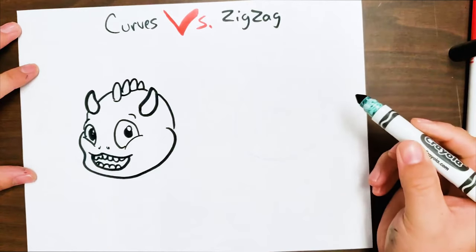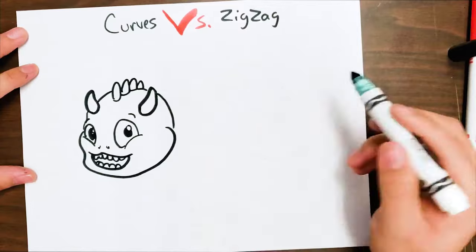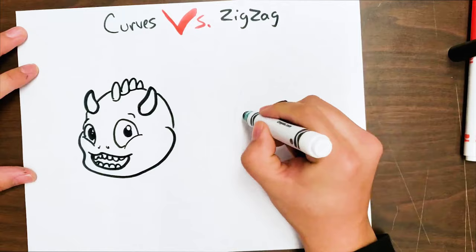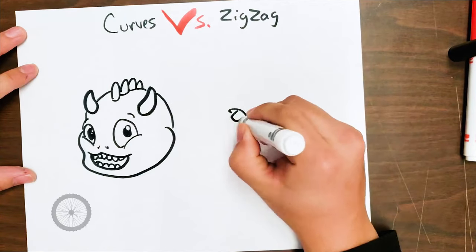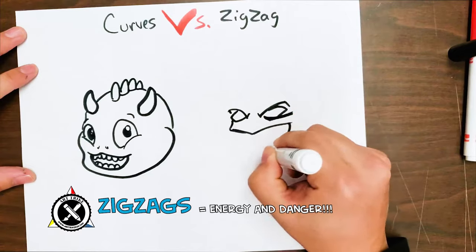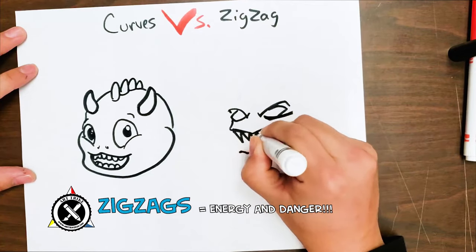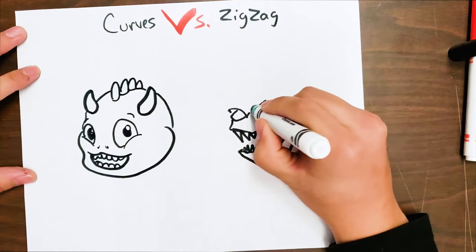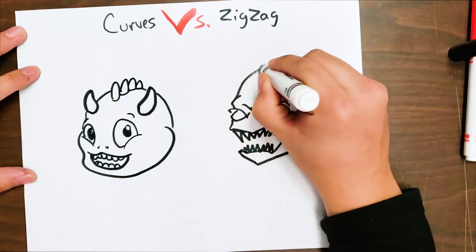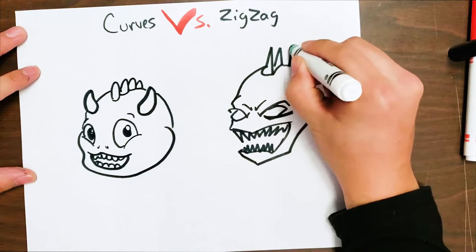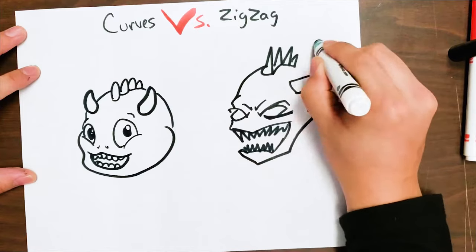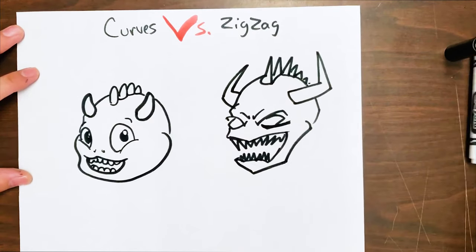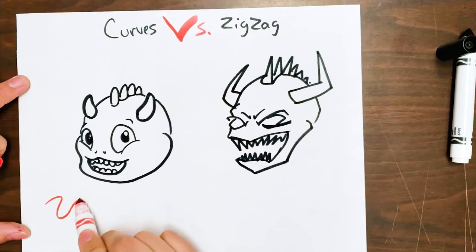However, if I draw the same monster using zigzags, really sharp lines with sharp turns, I get a different feeling. And this is because usually zigzags represent not only an energetic feel, but a dangerous feel. In our mind, short and sharp turns equals dangerous, kind of like a sharp object. It's dangerous. So if I add these same horns and spikes to this one with zigzags, it makes it look a lot more scarier than this cute little bubbly faced round monster.